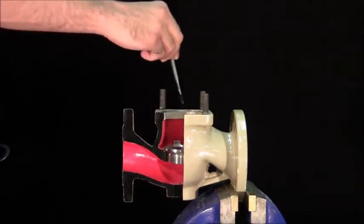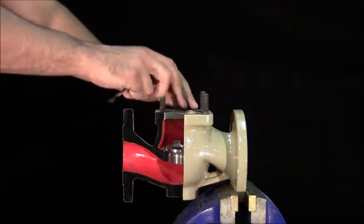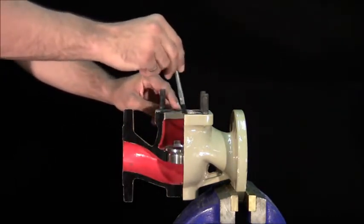When installing the body gasket, apply a small amount of grease on both sides to facilitate easy removal during maintenance and repair.